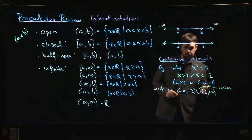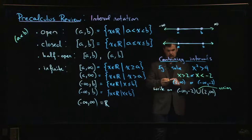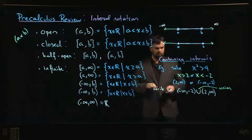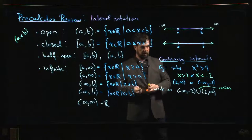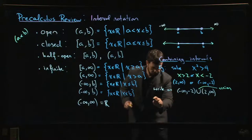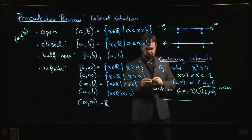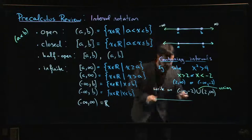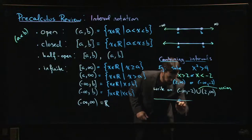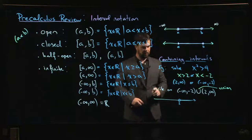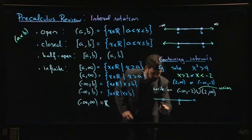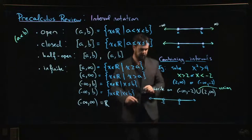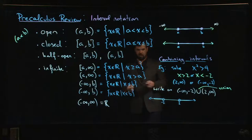On the number line, what this would look like is you would be saying, I'm including all the numbers starting at 2 and heading off to infinity, as well as all the numbers that are less than minus 2, heading off that way. So you have two pieces like that.